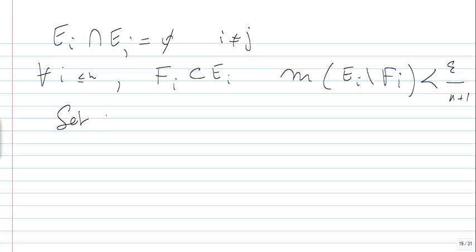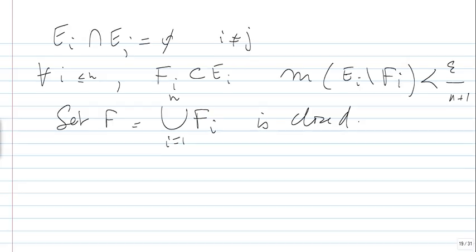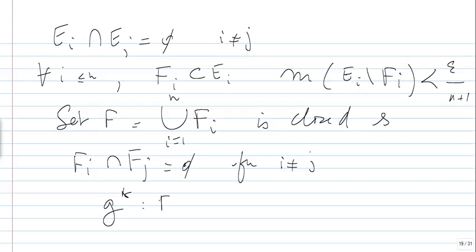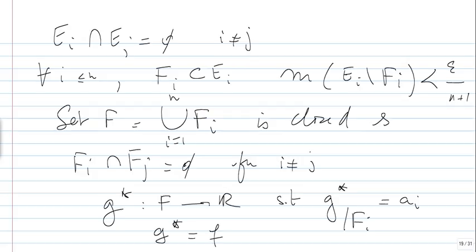Set F equal to the union of the F_i's. The F_i's are closed, and a finite union of closed sets is closed, so F is closed. Moreover, the F_i's are disjoint because the E_i's are disjoint — F_i intersect F_j is empty for i different from j. Now consider the function G* from F into R such that G* restricted to F_i equals A_i. Obviously G* equals F on F.